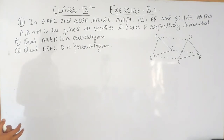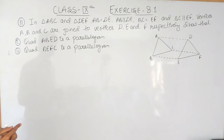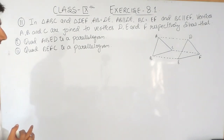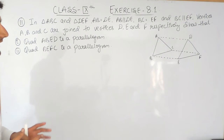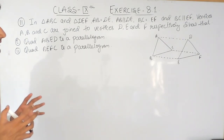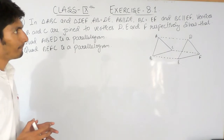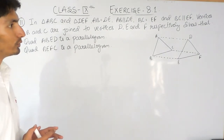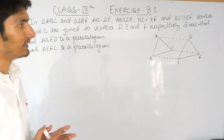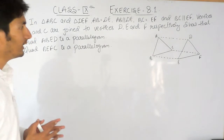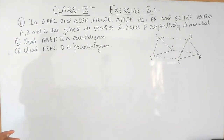The question is: in triangle ABC and triangle DEF, AB is equal to DE and AB is parallel to DE, BC is equal to EF and BC is parallel to EF, and vertices A, B, C are joined to vertices D, E, and F respectively.